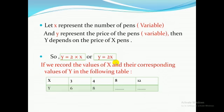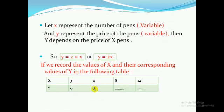If we record the values of X and the corresponding values of Y in a table: if X equals three, then Y equals two times three, which is six. If X equals four, then Y equals two times four, which equals eight. If X equals eight, then Y equals two times eight, which equals 16.